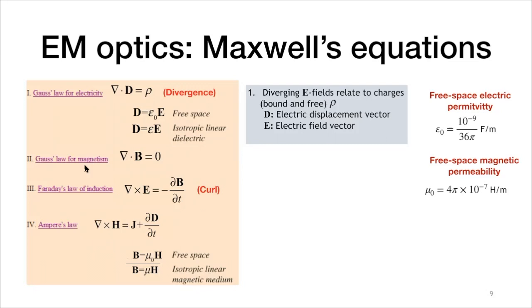So this is law number one. Then we come to law number two, which is Gauss's law for magnetism. We read this as the divergence of B, and B here is the magnetic flux density equals zero.